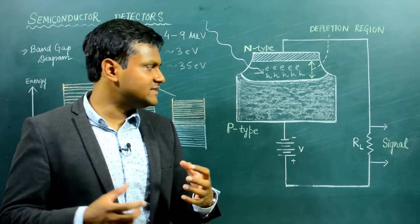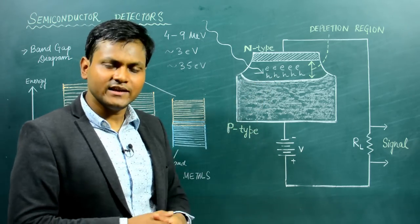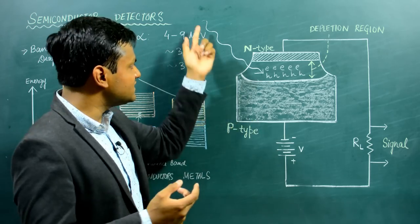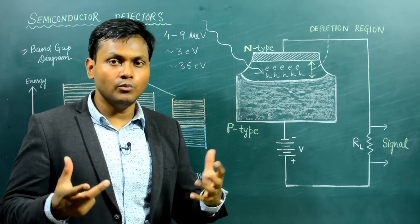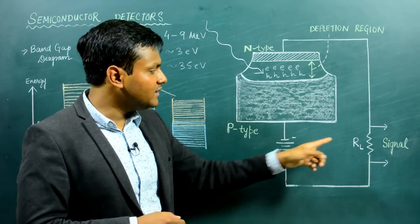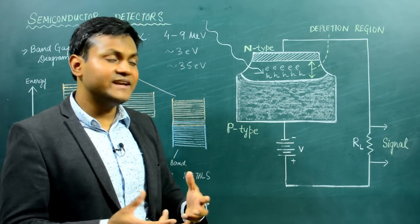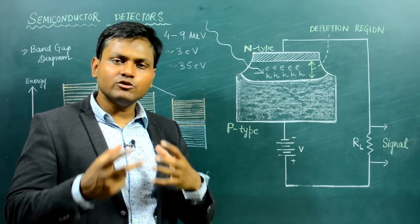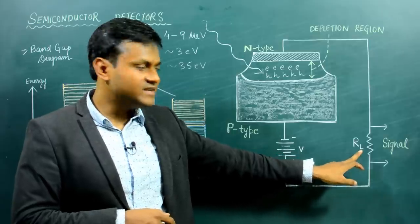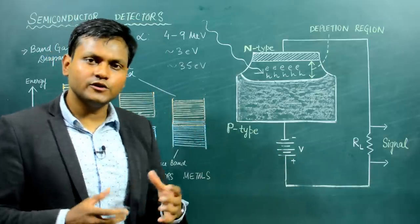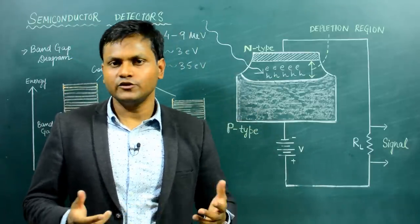That is the general working principle of a semiconductor detector. You have a P-N junction diode in reverse bias configuration, which has a depletion layer. If an external alpha particle comes inside the depletion layer, it transfers energy to the material by creating a large number of electron-hole pairs. These electrons complete the circuit and lead to the detection of a current pulse across the load resistance. The size of the current pulse gives us an idea about the energy of the incident particle, and we can distinguish between two particles having different energies by looking at the different sizes of current pulses. I hope you have understood something about the way these detectors work. Thank you very much.